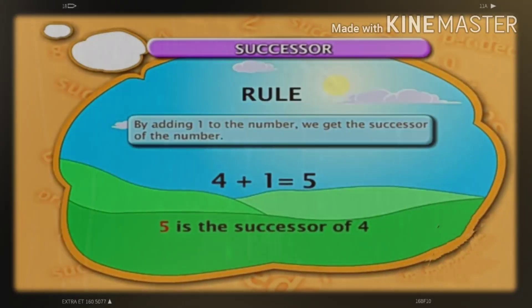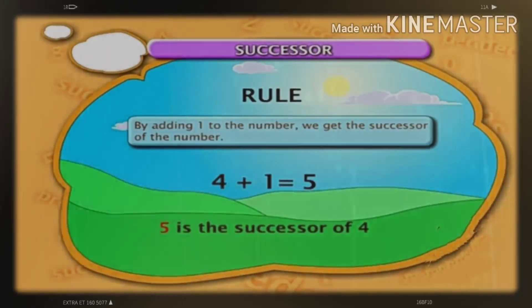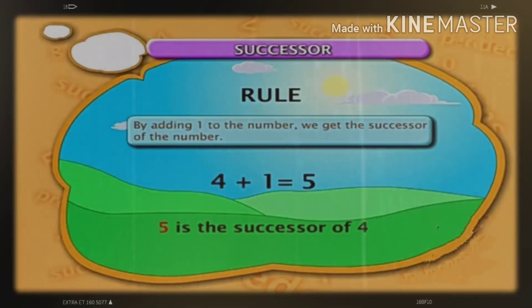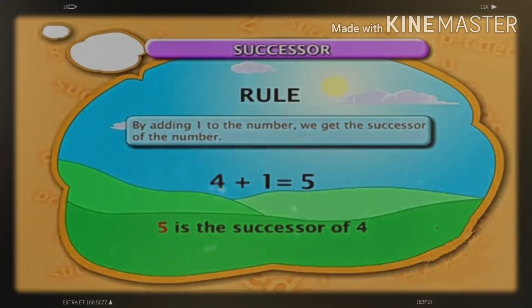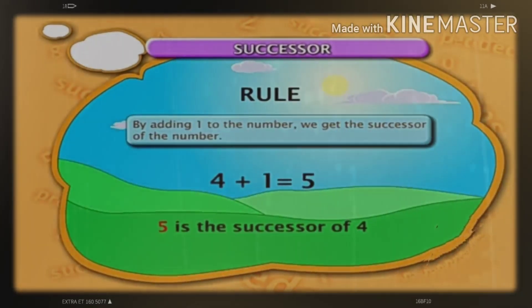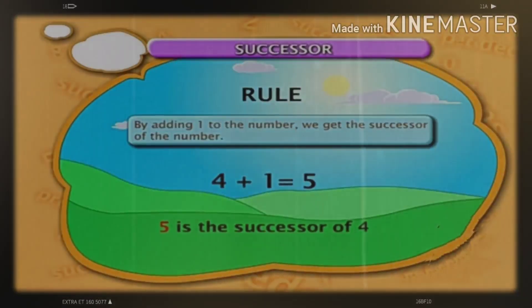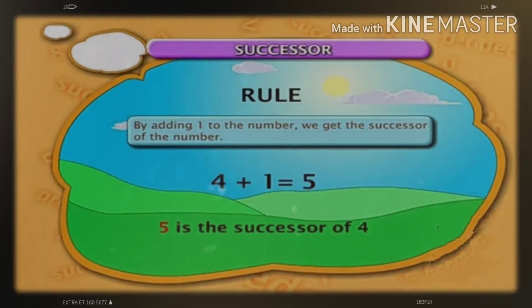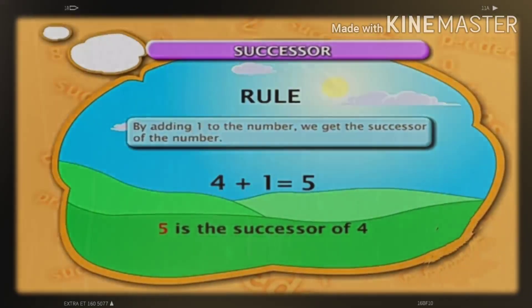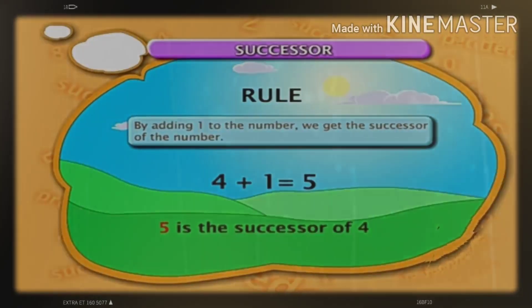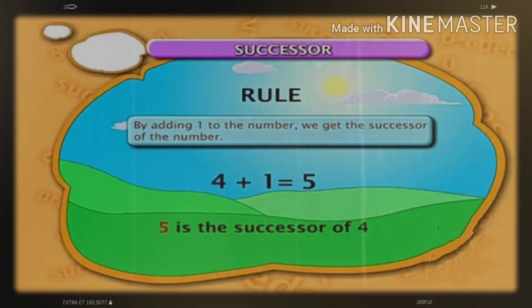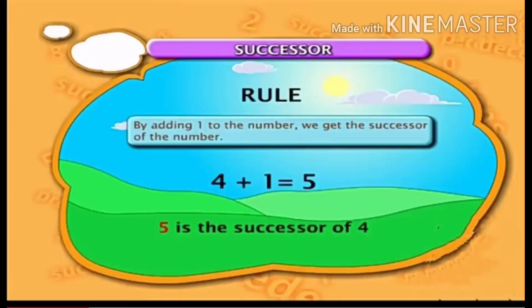So what comes just after 4? 5 comes just after 4. 5 is the successor of 4 because 5 comes just after 4.